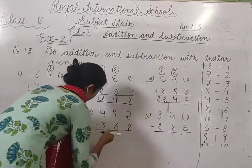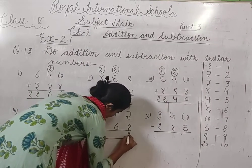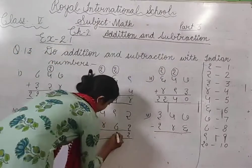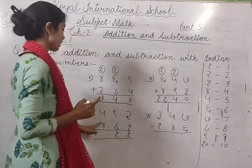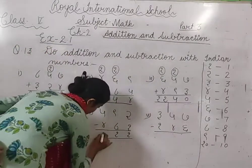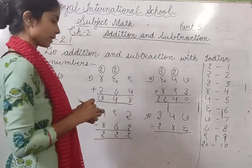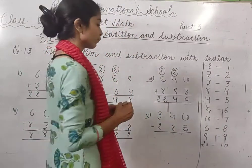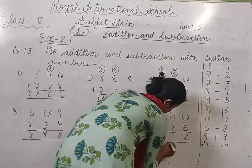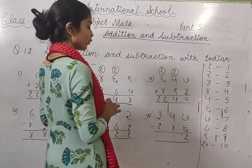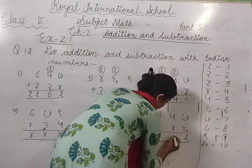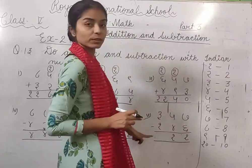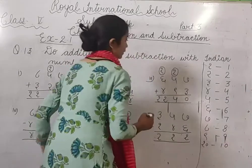Then next, 2 minus 1, remaining number is 1. Then 9 minus 8, 9 minus 8 remaining number is 1. And 5 minus 4, again remaining number is 1. Then next 7 minus 6, 7 minus 6 is 1. Then 5 minus 4 is 1. And 3 minus 2, 3 minus 1 it is 1. 3 minus 1 remaining number is 2.